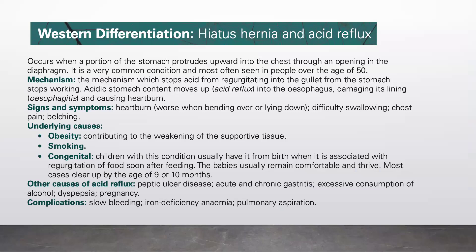This leads to esophagitis and causes heartburn. Signs and symptoms include heartburn, which is worse when bending over or lying down, difficulty swallowing, chest pain, and belching. Underlying causes include obesity, contributing to the weakening of supportive tissue, and smoking. Congenitally, children with this condition usually have it from birth, associated with regurgitation of food soon after feeding. Babies usually remain comfortable and thrive, and most cases clear up by the age of 9 or 10 months.